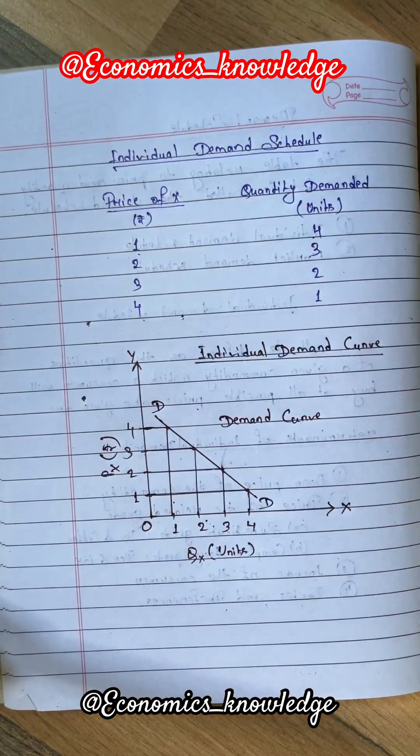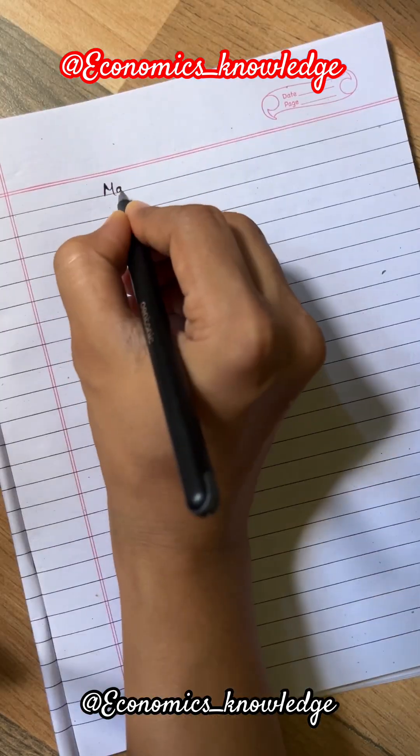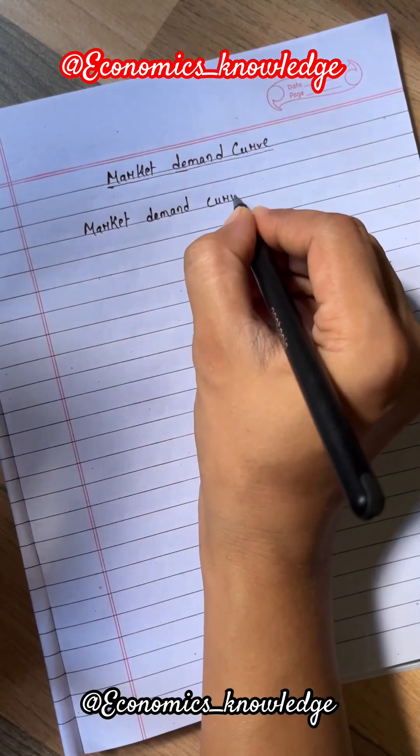Here dd is the demand curve which slopes downward from left to right, which means that at higher price demand is less and at lower price demand is more.